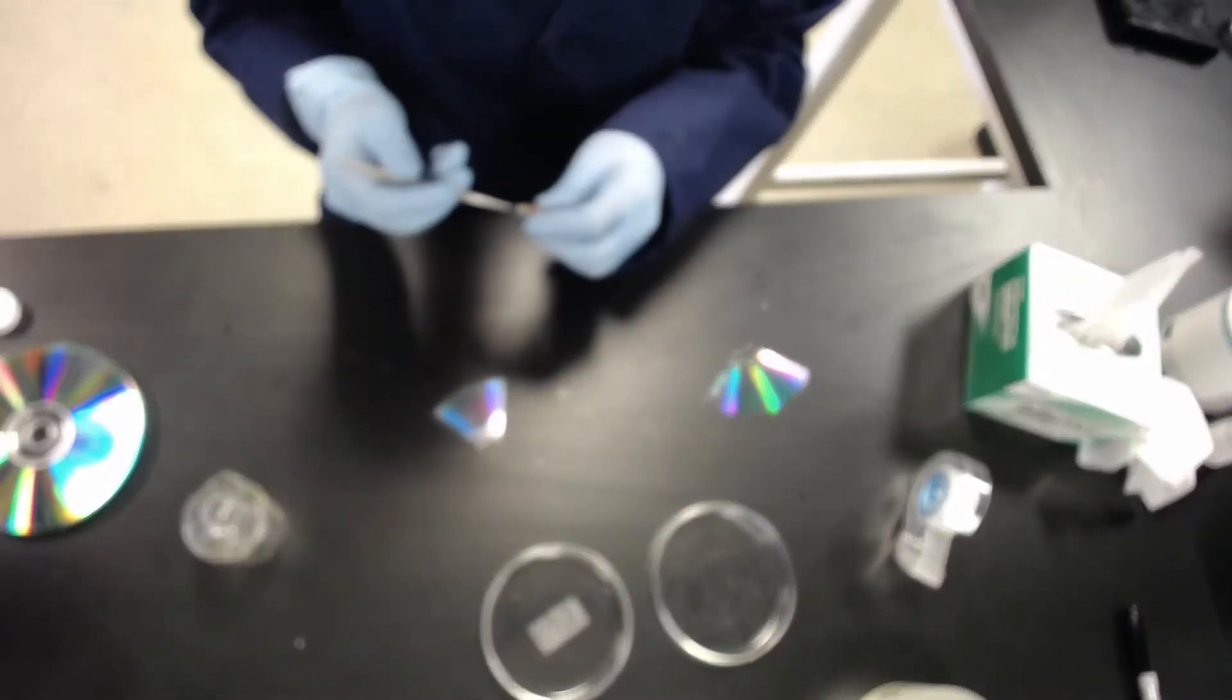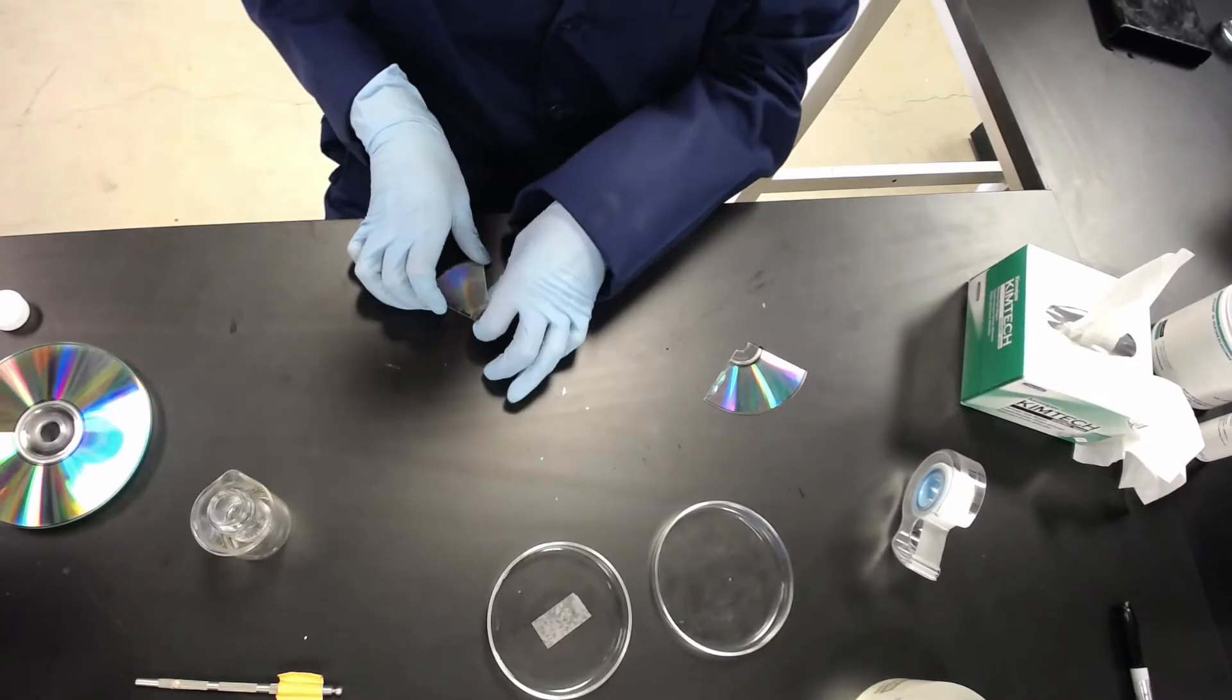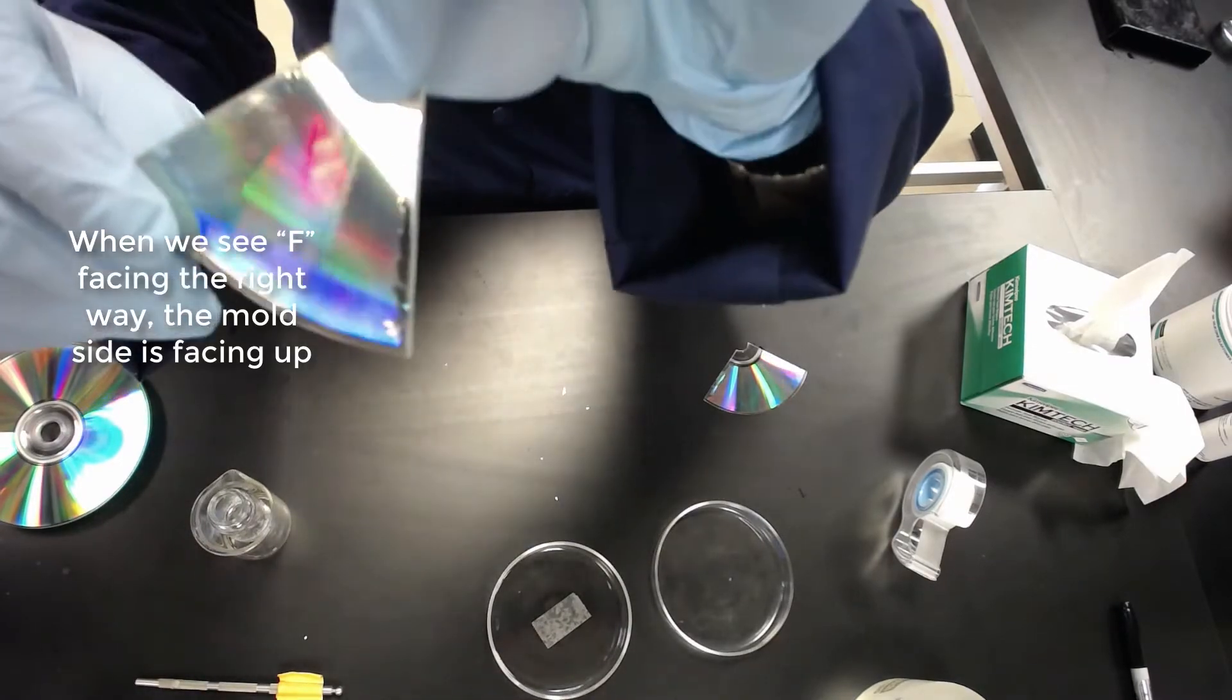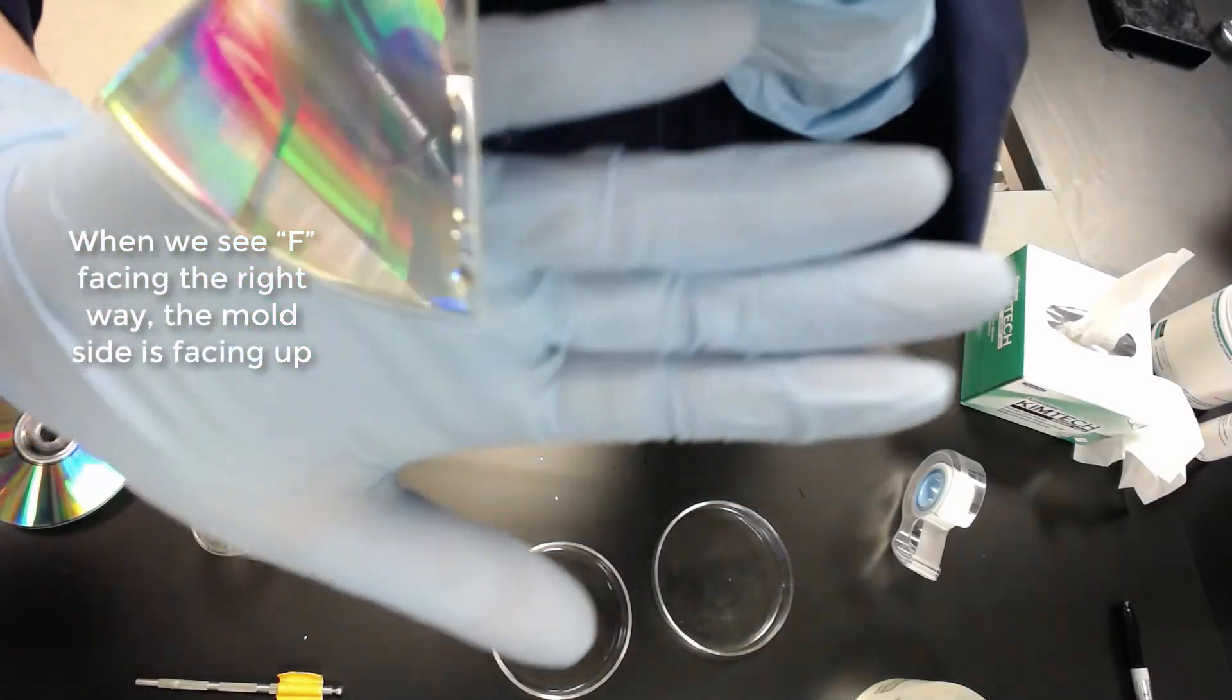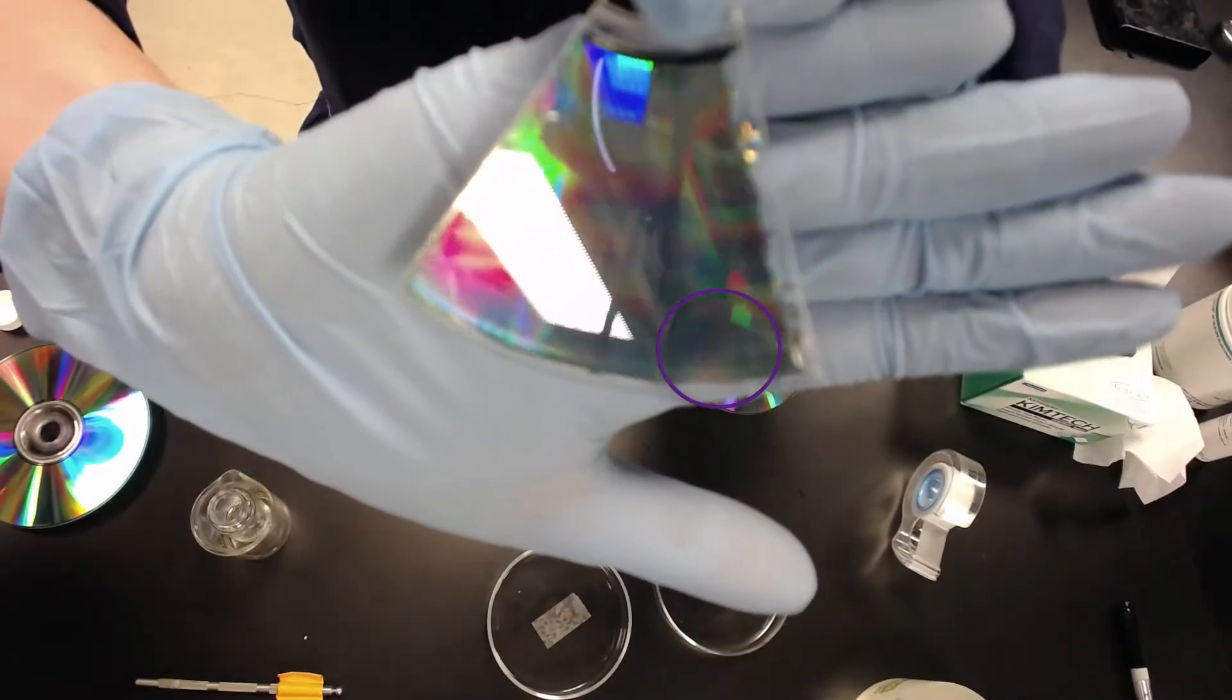So that when we flip it over, we'll be able to tell which is the side that has the mold on it. I'm not sure if you'll be able to see that. You can maybe see there's a little F in the corner now that's backwards.